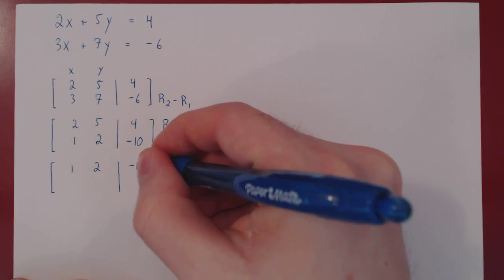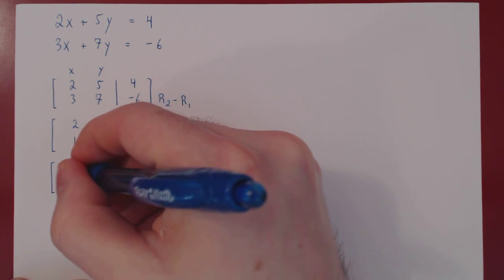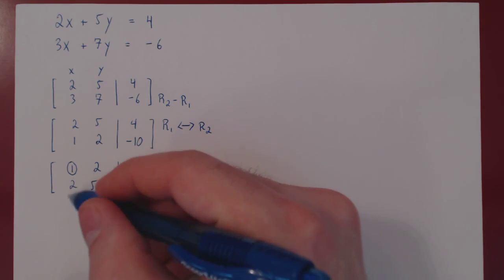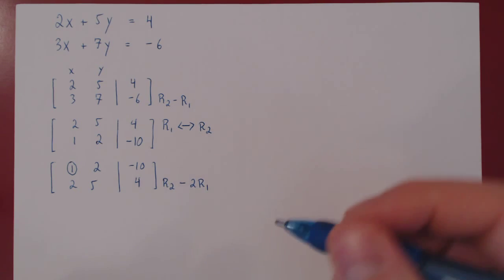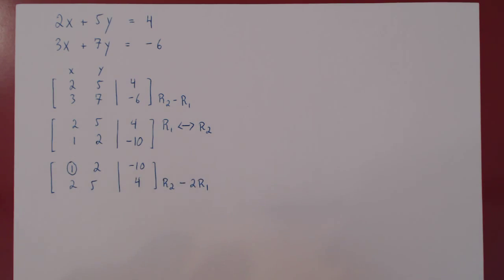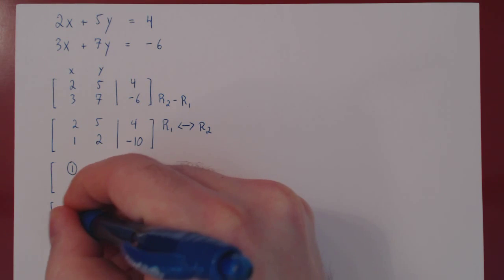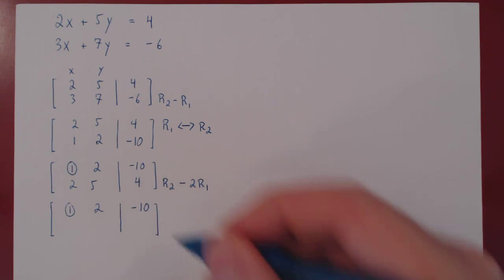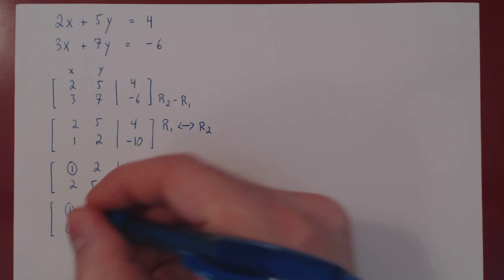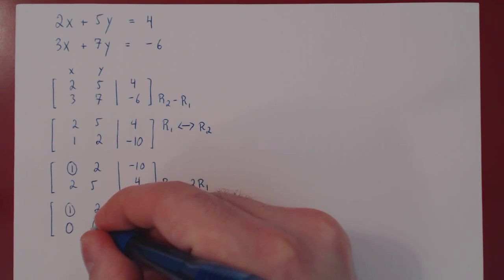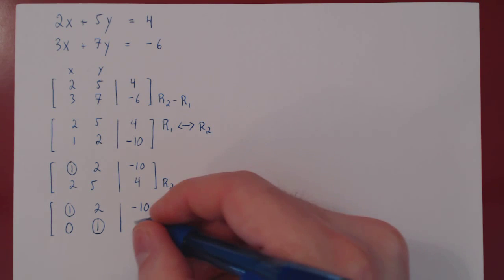Row two becomes row one. Now that we have our leading one in the leftmost column in the top row, our job is to kill the entries below it. To kill this two, we will do row two minus two times row one. Two minus two times one is zero, and now we're good to go. We are only changing row two, so let's recopy row one and apply this operation to the entire second row. Two minus two is zero. Five minus two times two: five minus four is one. And this becomes, for free, our second leading one. And four minus two times negative ten is plus twenty, which gives us twenty-four.